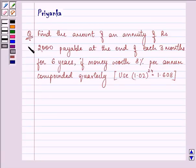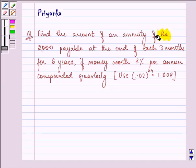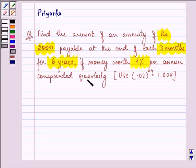Hi, and how are you all today? The question says find the amount of an annuity of rupees 2000 payable at the end of each three months for six years, if money is worth 8% per annum compounded quarterly. We need to use the value of 1.02 raised to the power 24 as 1.608.